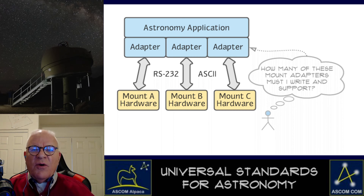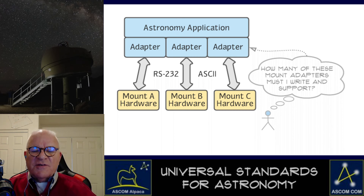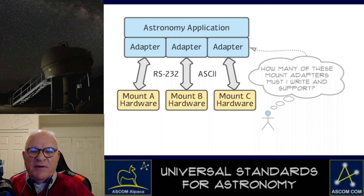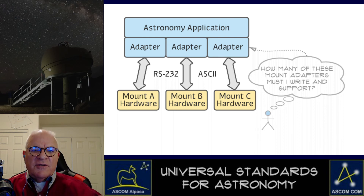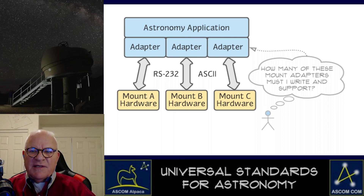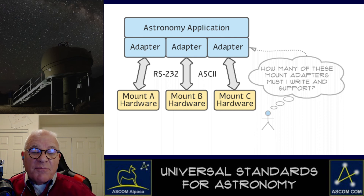As you know, without a common universal interface, you have to write adapter code for every single type of device out there. So if you were doing this, you'd have your own code to talk to mount A, B, C, and D. In other words, how many of these mount adapters must I write and support?